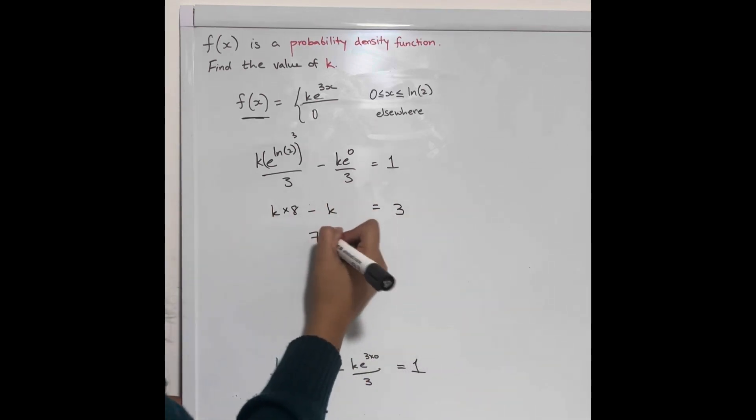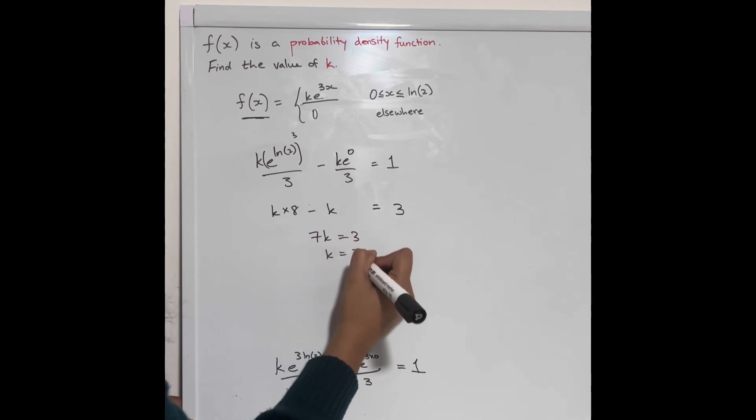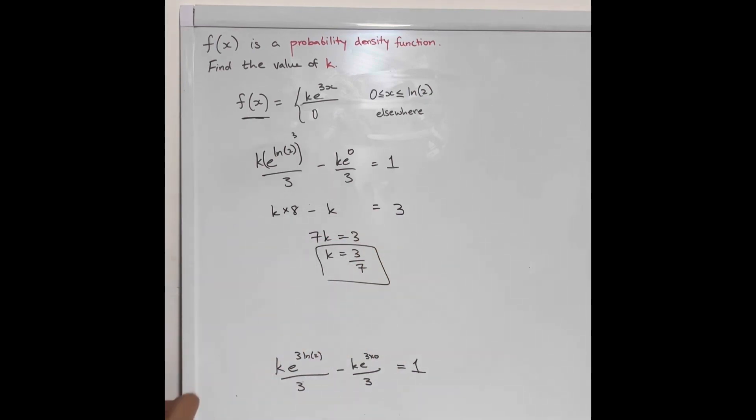So this is 7k equals 3, so k will equal 3 over 7.